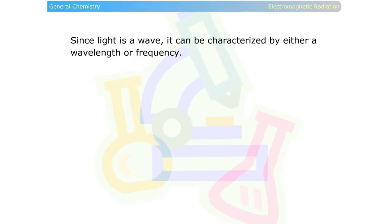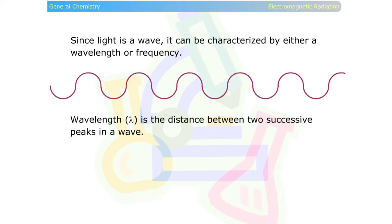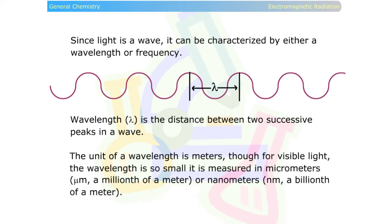Since light is a wave, it can be characterized by either a wavelength or frequency. Wavelength, represented by the Greek letter lambda, is the distance between two successive peaks in a wave.